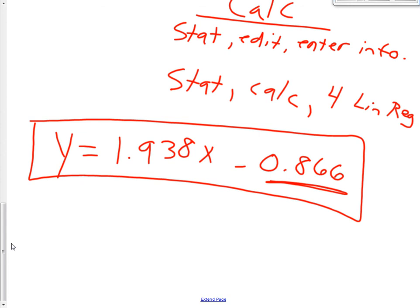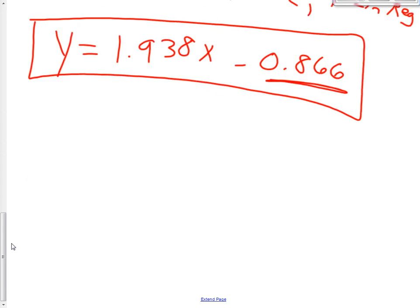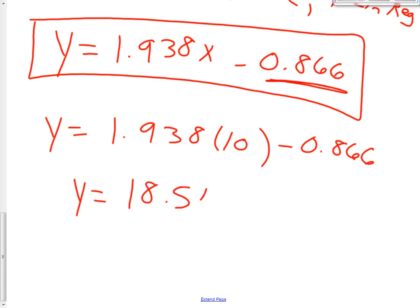So, if you have to get it exactly perfect, you've got to use your graphing calculator. So, let's finish this one through now. Let's find the prediction of what happens when X is 10. So, Y equals 1.938 times 10 minus 0.866. When you do all that work, you get the number Y equals 18.514. And, there's our answer.